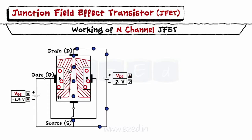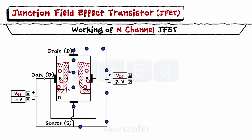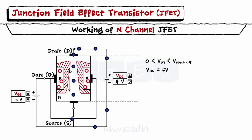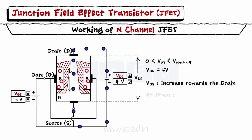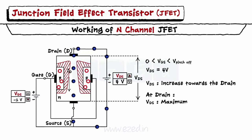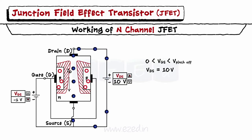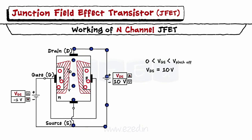Let's keep the VGS voltage constant between 0V and the pinch-off value and increase the VDS voltage. VDS is nothing but the voltage drop across the channel, which increases as we move towards the drain. The reverse bias voltage of VGS is the highest at the drain. Thus, the depletion region gets a tapered shape near the drain and the channel becomes much narrower. Thus, ID remains constant and the characteristic graph becomes non-linear.